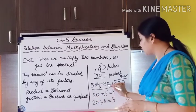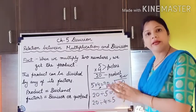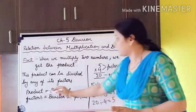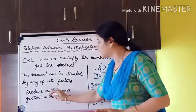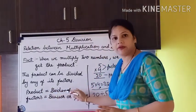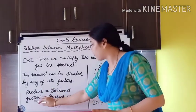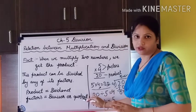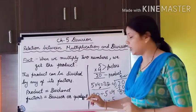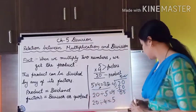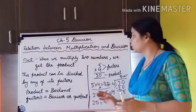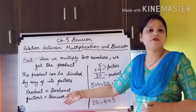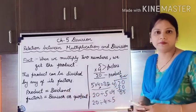You have seen that every multiplication fact has two division facts. If the first factor is divisor then the second factor will be quotient. If the second factor is divisor then the first factor will be quotient. The product will always be the dividend. Hope this is clear — write these facts in your maths copy.